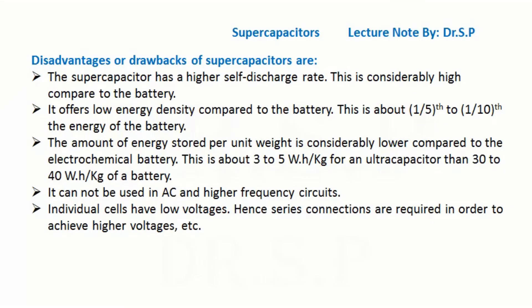Energy storage is about 3 to 5 watt-hours per kilogram for an ultracapacitor, compared to 30 to 40 watt-hours per kilogram for a battery. Supercapacitors cannot be used in AC and higher frequency circuits. Individual cells have low voltages; hence series connections are required in order to achieve higher voltages.